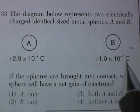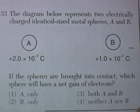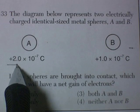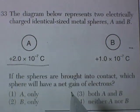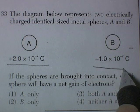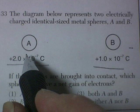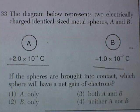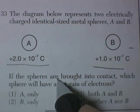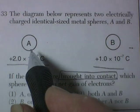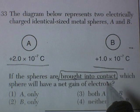Question 33. The diagram represents two electrically charged, identically sized metal spheres, A and B. This has a positive charge of 2 times 10 to the negative 7 coulombs. And this also has a positive charge of 1.6 times 10 to the negative 7 coulombs. So this is a stronger positive charge than this one. The spheres are brought into contact. And this is kind of a vocabulary thing again, or a concept thing. When you bring charged objects to touch, the charge is equally distributed between them.